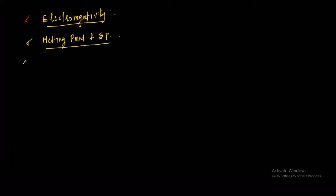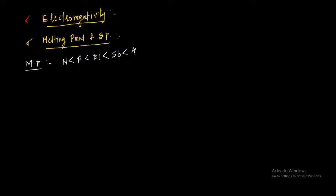The overall order for melting point is not a regular trend, so you have to memorize it. Nitrogen is minimum, then phosphorus, bismuth, then antimony, and arsenic is maximum.